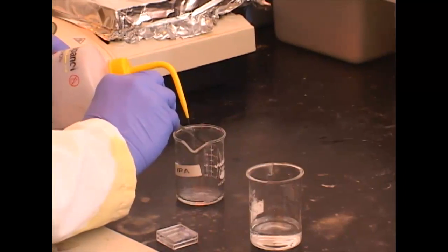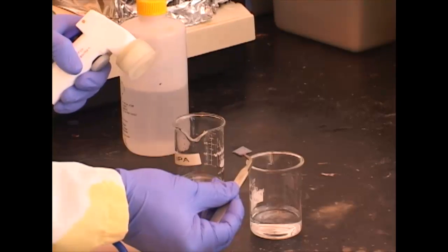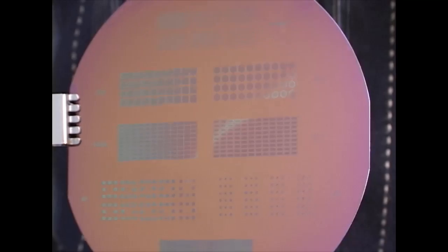That's methyl isobutyl ketone in isopropanol. That developer will take the broken PMMA and rinse it out. So the exposed areas actually make troughs in the resist.